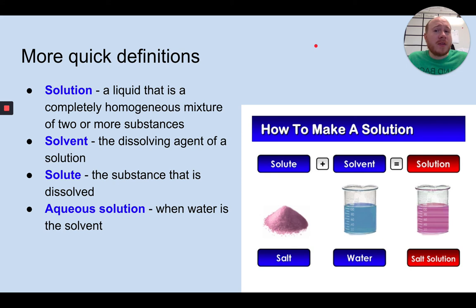Some other quick definitions. A solution is a liquid that is a completely homogenous mixture. That means you can't see the parts of two or more substances. A solvent is the dissolved agent of a solution. A solute is the substance that is dissolved, is what you put into the liquid. And an aqueous solution is when water is the solvent.